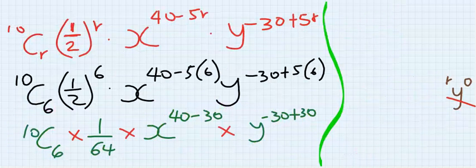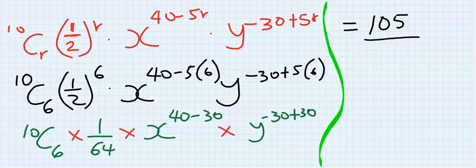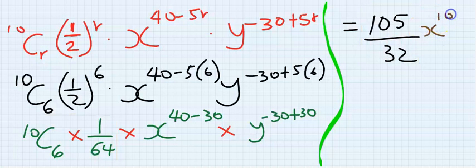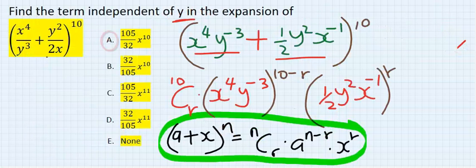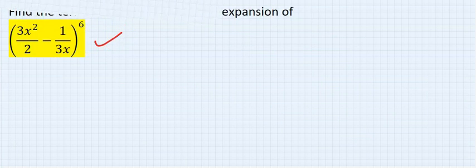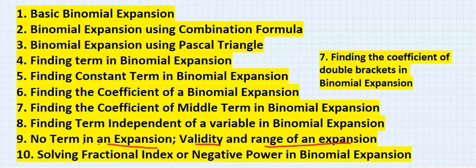Substituting r equals 6 and simplifying carefully, you're going to get your answer to be 105 over 32, x to the power of 10. This is our final result. Going back to the options, our answer is A: 105 over 32. You can try this on your own and also try this as well. I will see you in the next video.